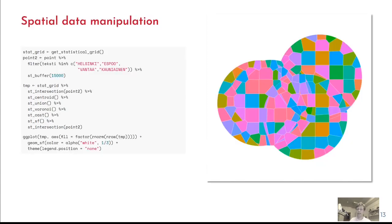The package includes a vignette on spatial data manipulation and analysis, demonstrating basic spatial manipulation steps using geofi data and the SF package. As an example, we pick central localities of four metropolitan area municipalities, create a 15 kilometer buffer around them, and cut that piece from the 5 km by 5 km statistical grid data. We then compute centroids for each grid cell, create Voronoi polygons around those points, and add a random fill to each polygon.